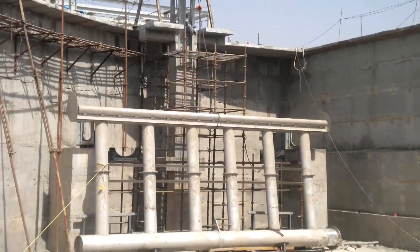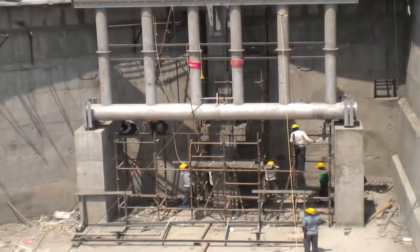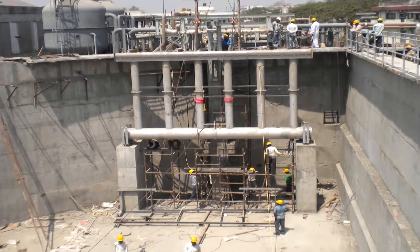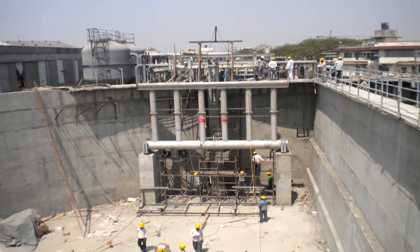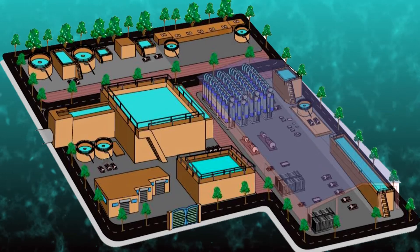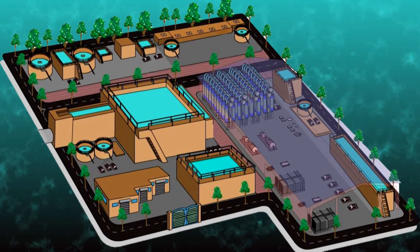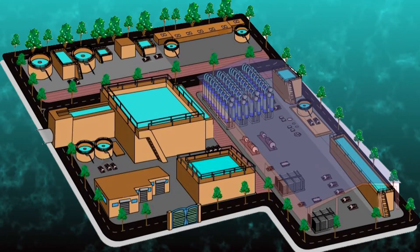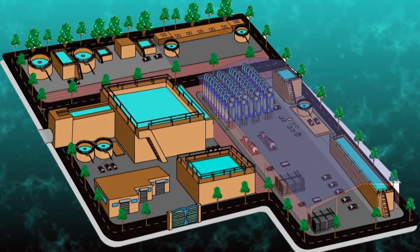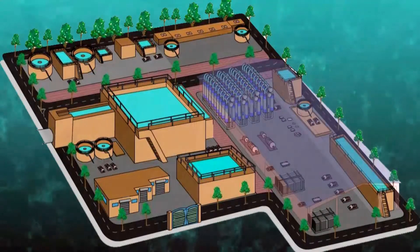AquaTech's engineers took advantage of the circular design to expertly fit the two CASS basins into the triangular shape of the plot. However, this left little space in which to place the recycle system. In a typical sewage treatment plant, the feed and permeate tanks would be constructed in a series or even one on top of the other, increasing civil engineering complexities and escalating construction costs.